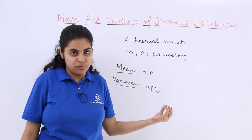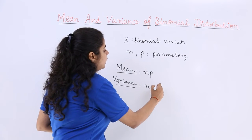What is n? n is the number of trials. What is p? p is the probability of success.